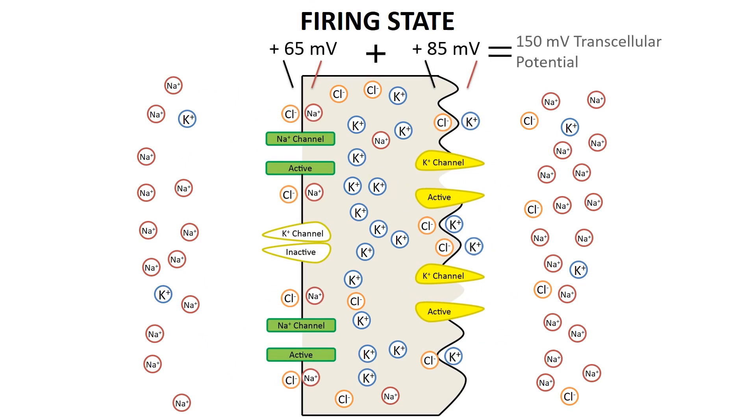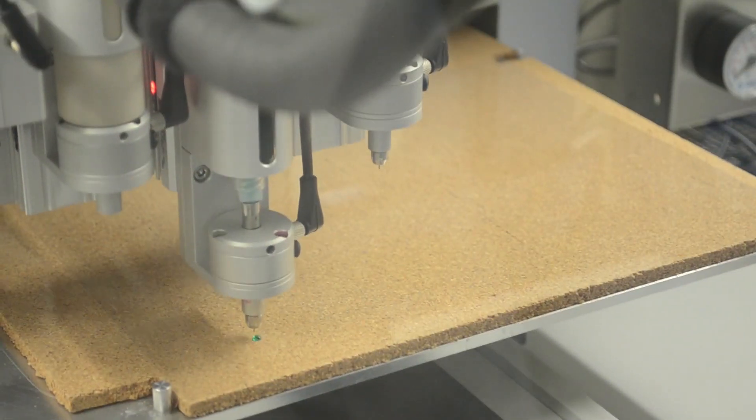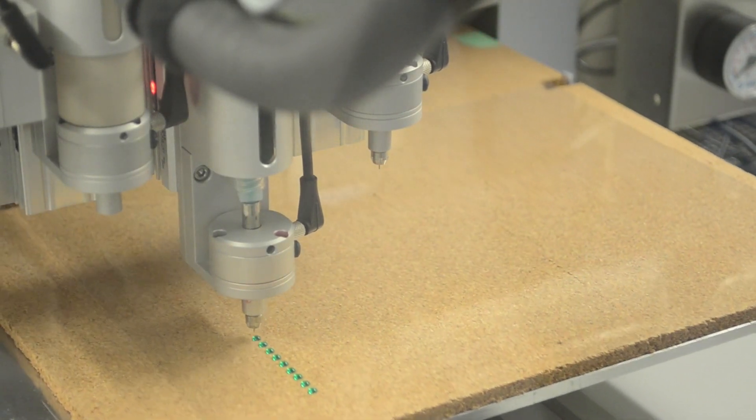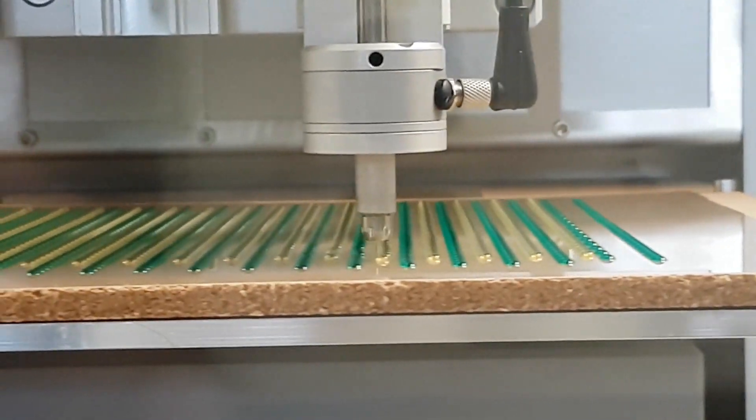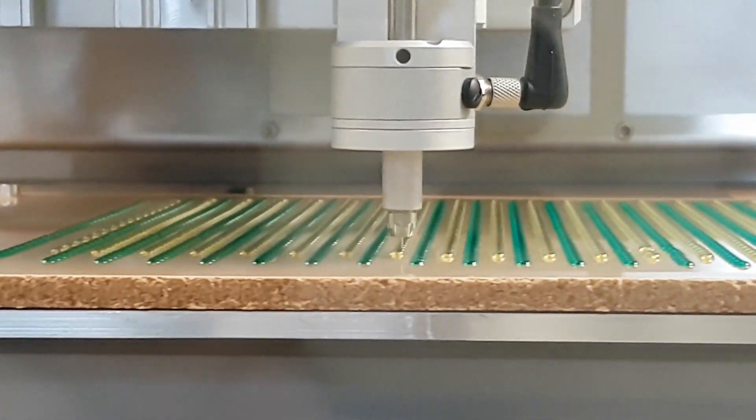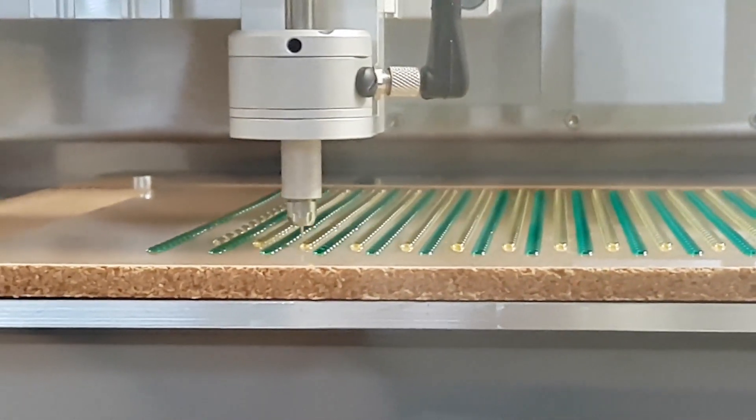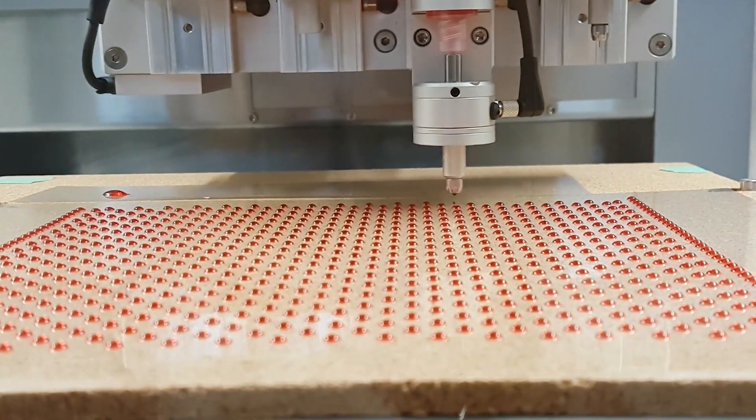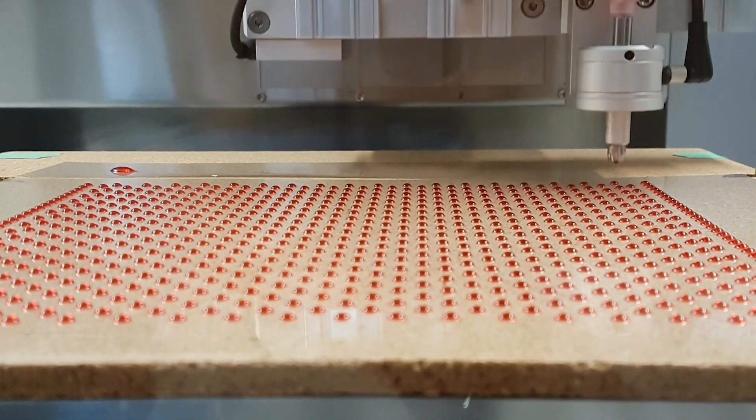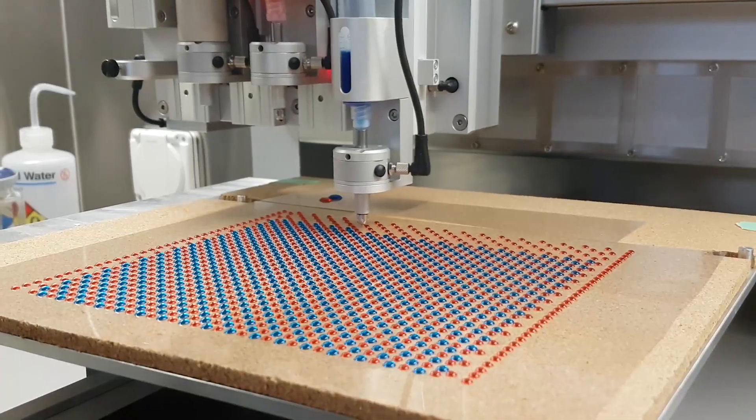The power generator works in a similar way. Alternating hydrogels mimic the eel's electrocyte cells and membranes. There are four different types of hydrogels: one with a high concentration of sodium chloride, one with a low concentration of sodium chloride, and two charged membranes, one negative and one positive.